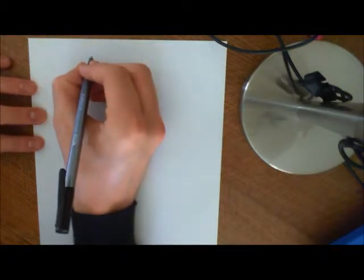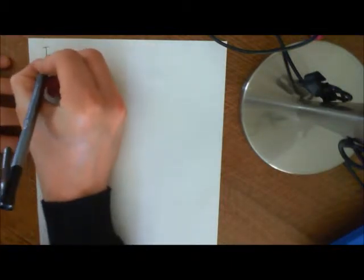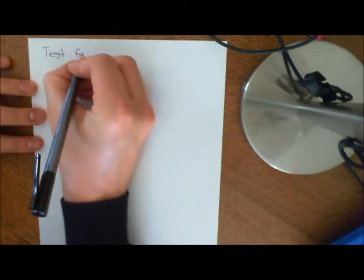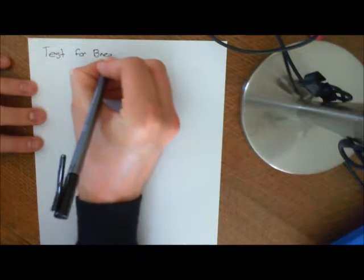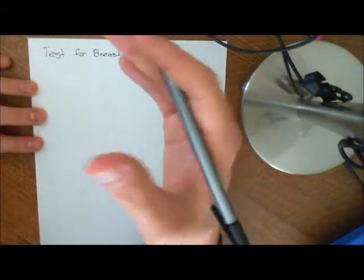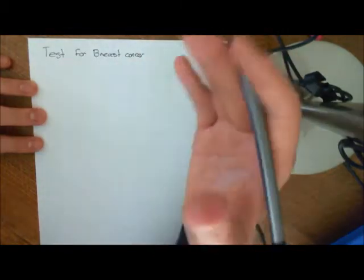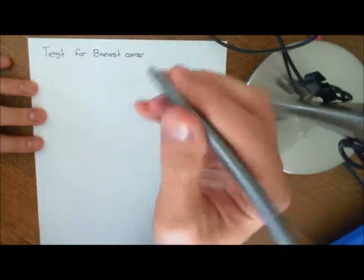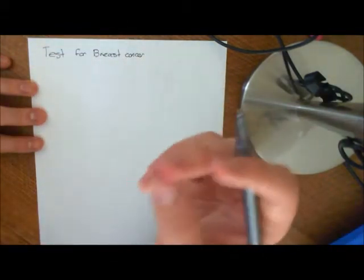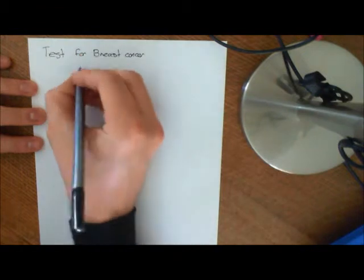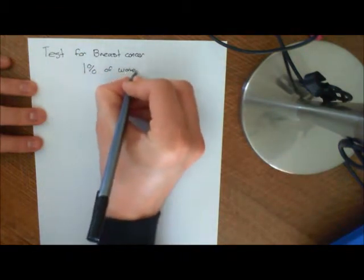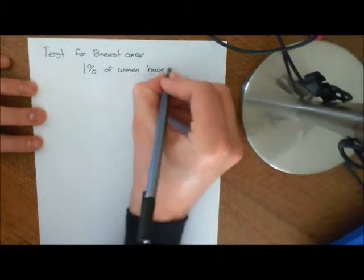So let's do the setup for this question. We have a test — just for a concrete example, let's say it's for breast cancer. And we test women. Let's say the incidence of the disease, which means the actual percentage of the population that has the disease, is 1% — so 1% of women have breast cancer.